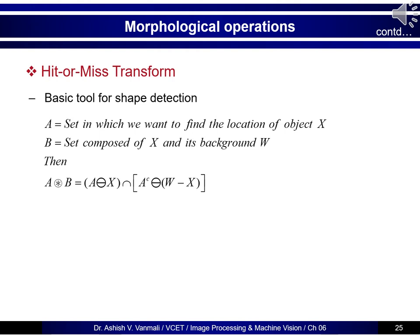Now we move to the fifth operation that is called the Hit and Miss Transform. Hit and Miss Transform is actually a tool to detect shapes in an image. The formulation is: we consider A as a set in which we want to find the location of object X, and B as a set composed of X and its background W. The Hit and Miss Transform is A ⊛ B = (A ⊖ X) ∩ (A^c ⊖ (W − X)). The symbol is an asterisk with a circle around it, similar to circular convolution.